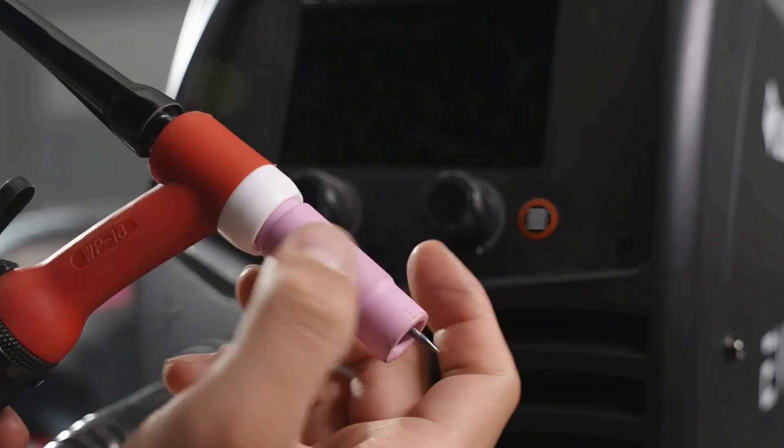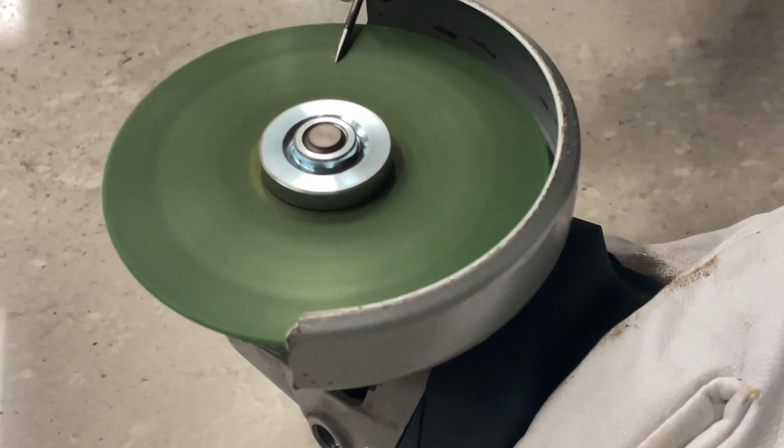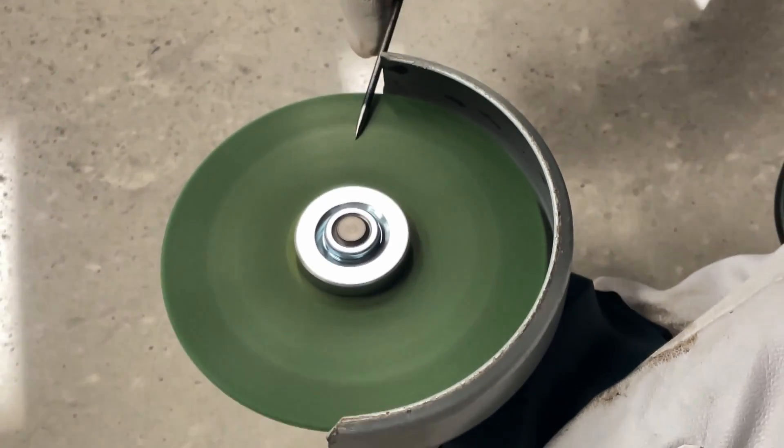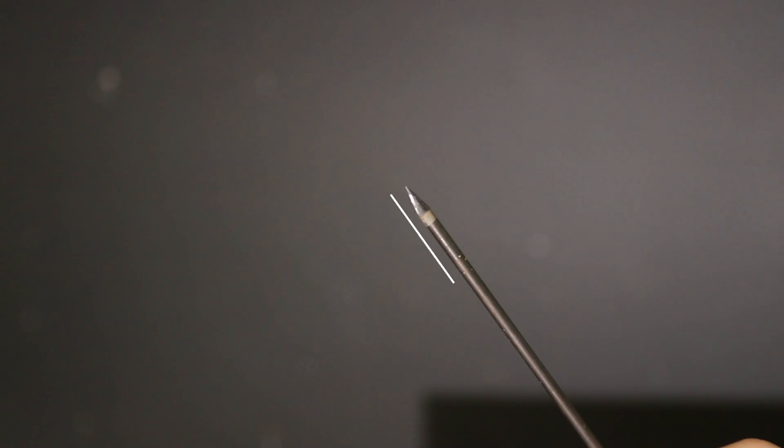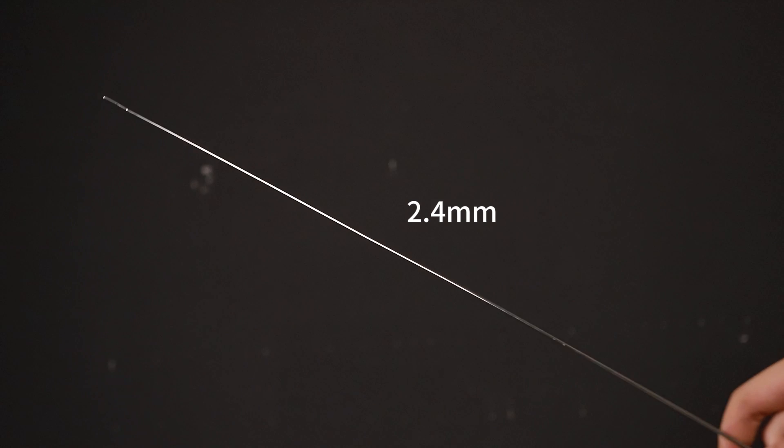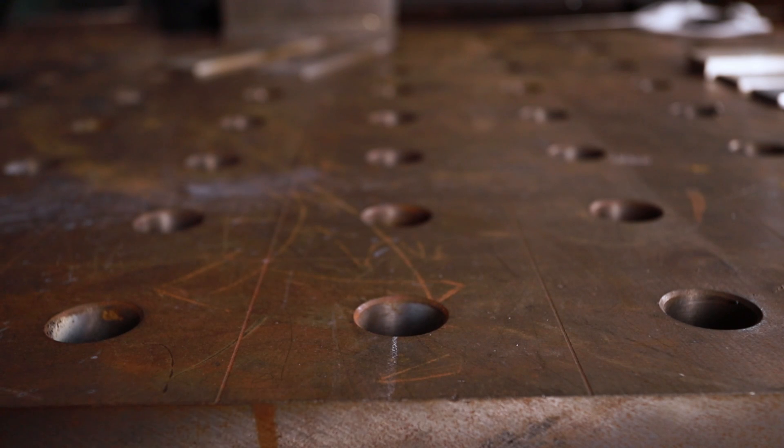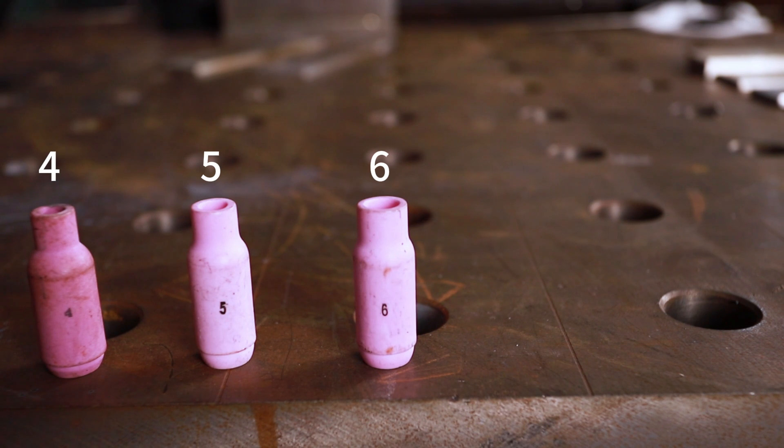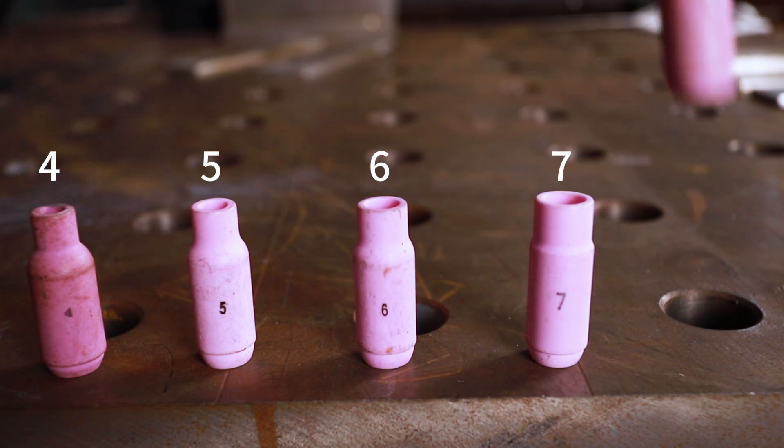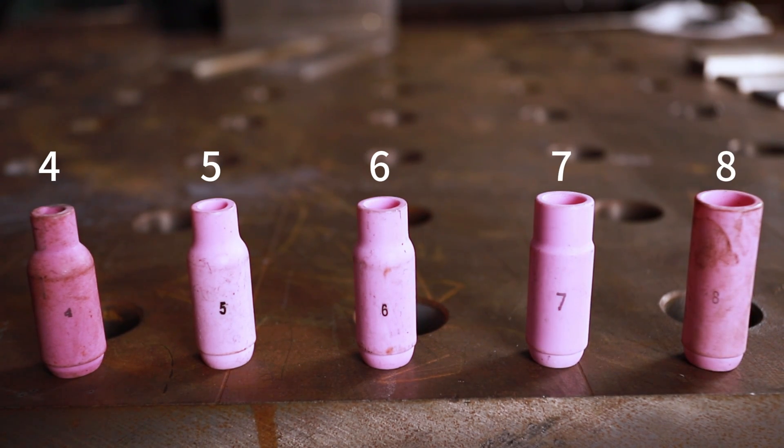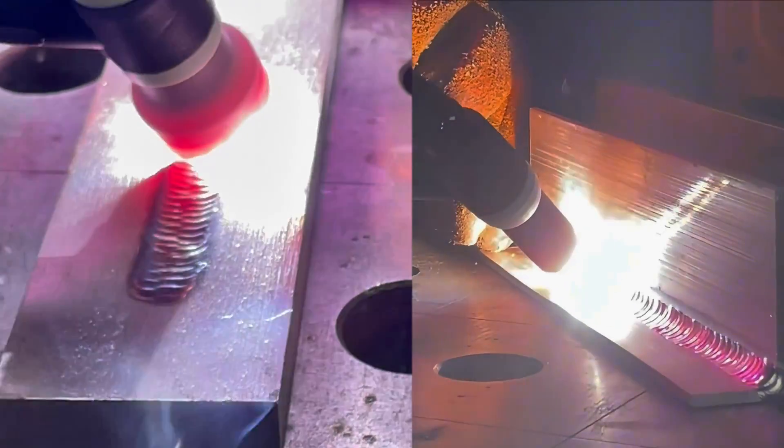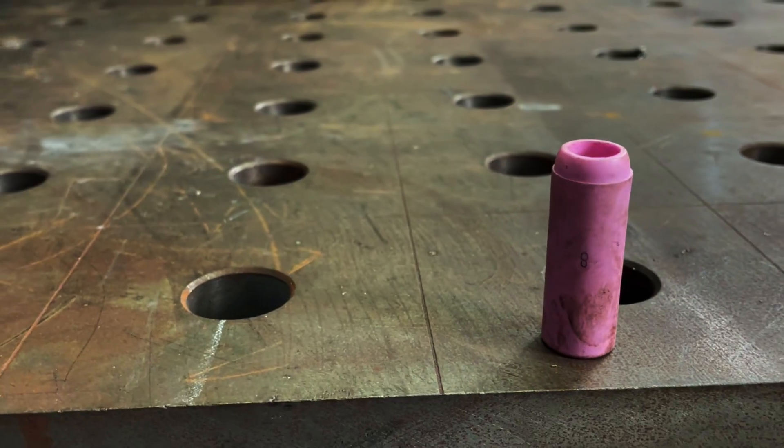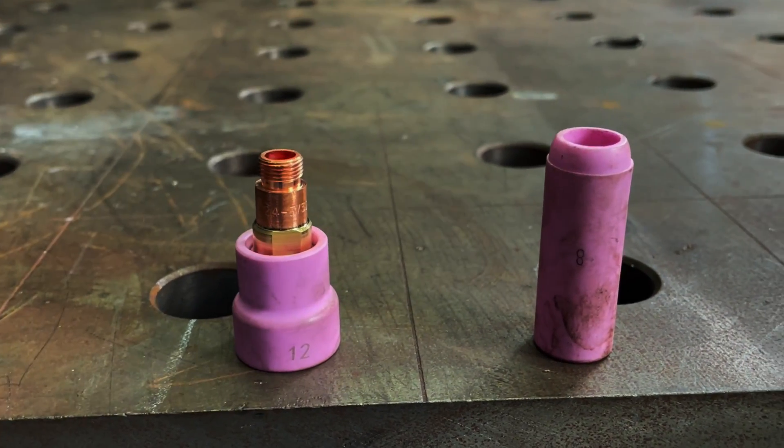We'll use a 2.4mm tungsten electrode and sharpen it to a fine point, approximately a 20-degree angle, to focus the arc and help control the welding process. Match it with a 2.4mm stainless steel filler rod, then choose a ceramic cup between 5mm and 8mm in diameter, preferably with a mesh filter to ensure broad and consistent gas coverage. A pro tip: reactive metals like stainless steel require larger truncated cups for better gas coverage.